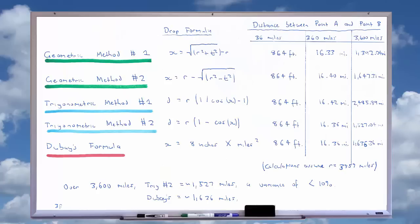We also found that the results given by these geometric and trigonometric equations accord with the results given by Dubay's formula, i.e. 8 inches times the mile squared.